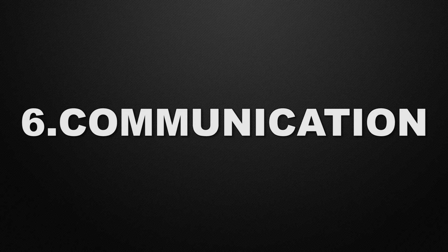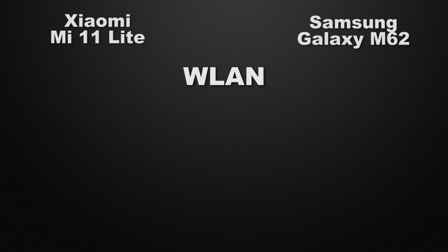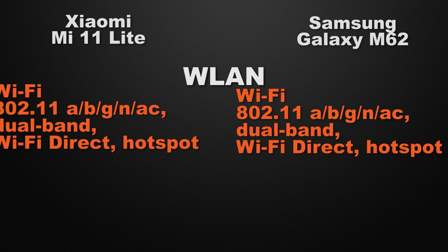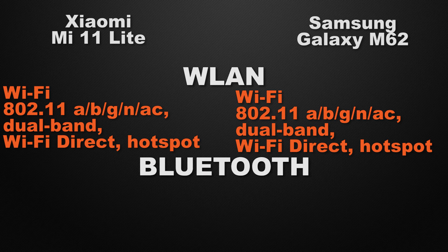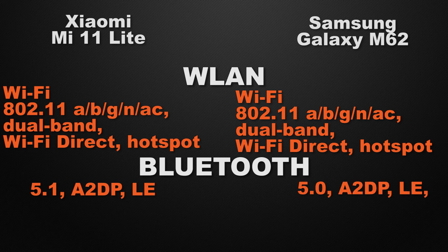Moving to the communication chips, both devices come with Wi-Fi AC, dual-band Wi-Fi, Wi-Fi Direct, and hotspot support, so it's a tie. For Bluetooth, the 11 Lite has Bluetooth 5.1 while the M62 has Bluetooth 5.0. So the winner here is the 11 Lite because it has the newer generation of Bluetooth.